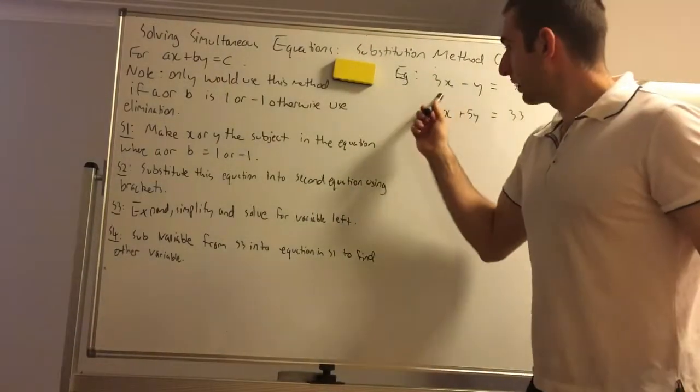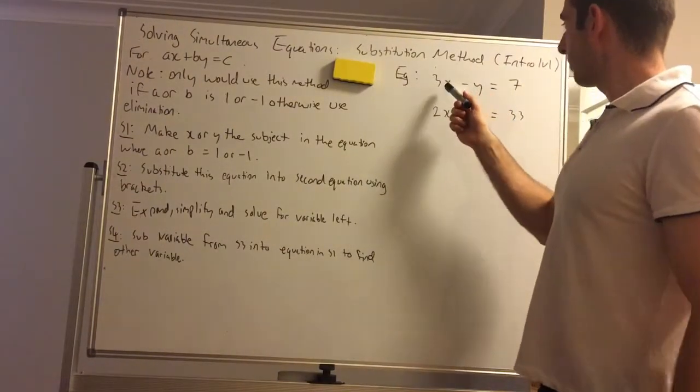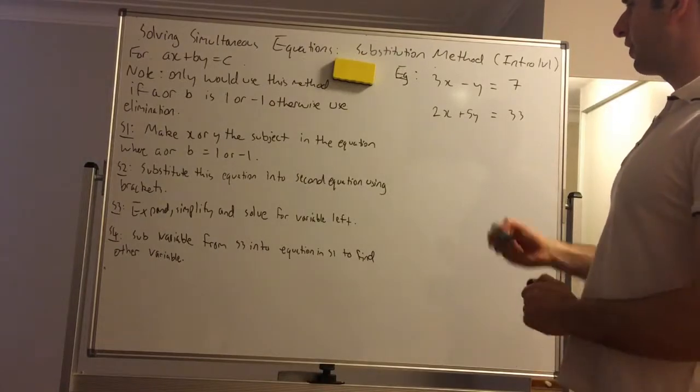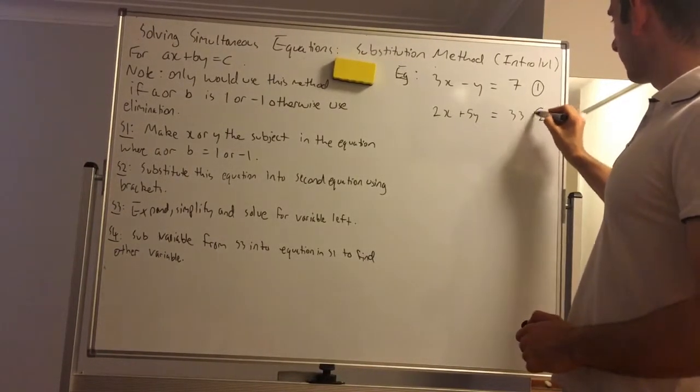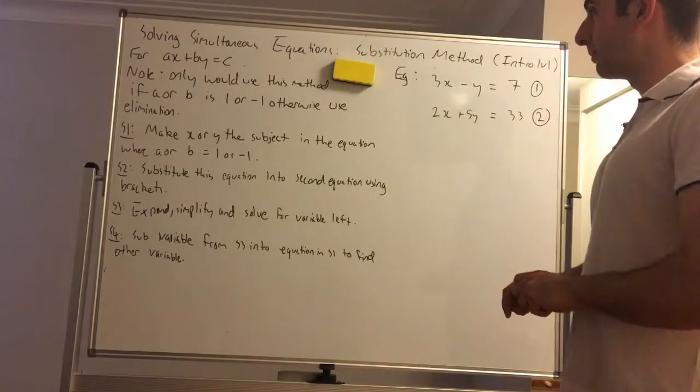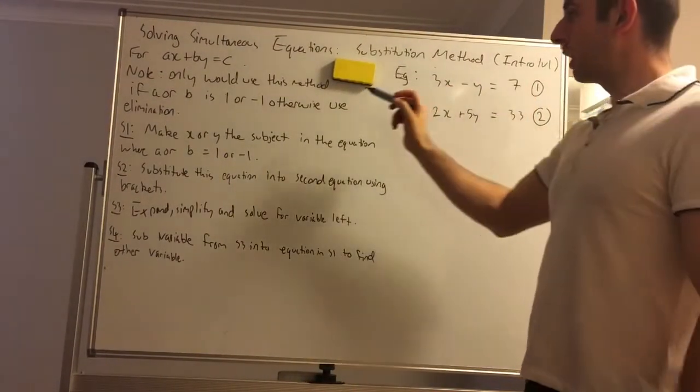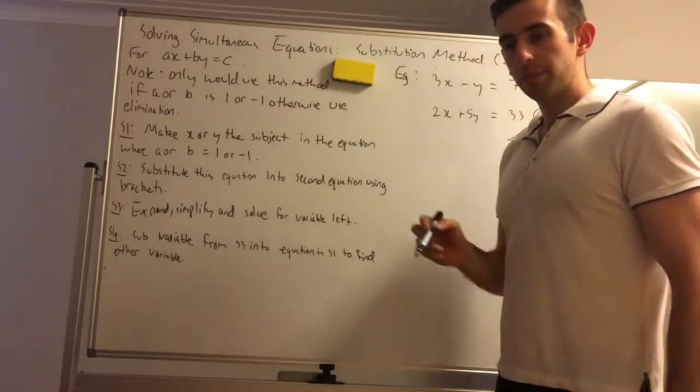So if we look at this example here, we have 3x minus y equals 7, 2x plus 5y equals 33. Don't forget to label the equations as I've mentioned in the elimination method question video. So notice the coefficient of y is negative 1, so substitution can be used here.